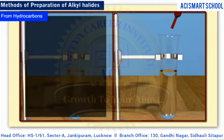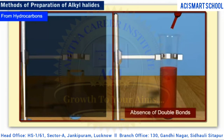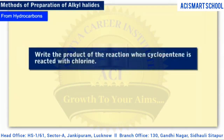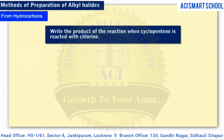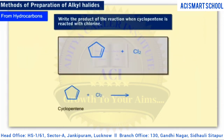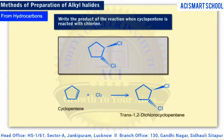Try this problem on your own: write the product of the reaction when cyclopentene is reacted with chlorine. Start by drawing the structural formula for cyclopentene. The chlorine atoms attach at the location of the double bond, resulting in a saturated compound with no multiple bonds. It turns out that the halogen atoms attach to opposite faces of the double bond to give a trans-structure.